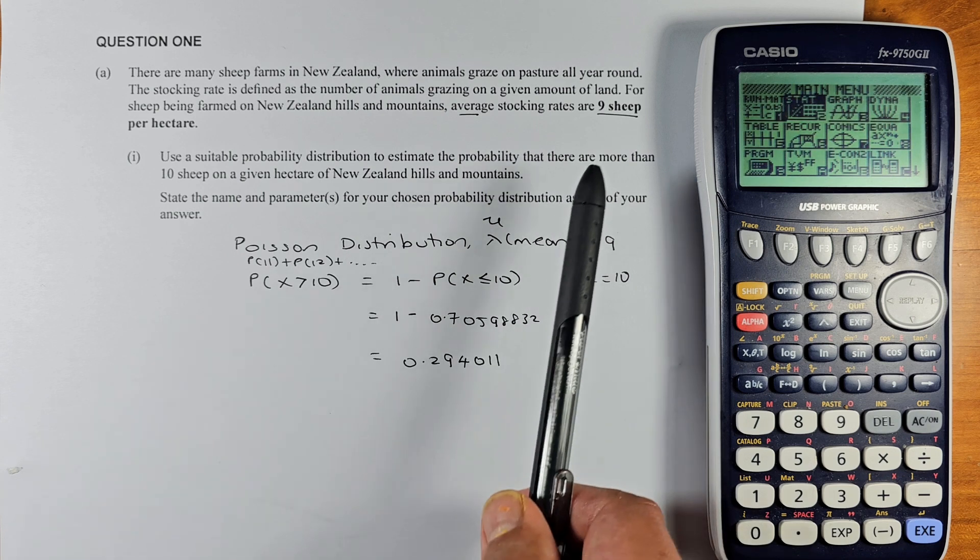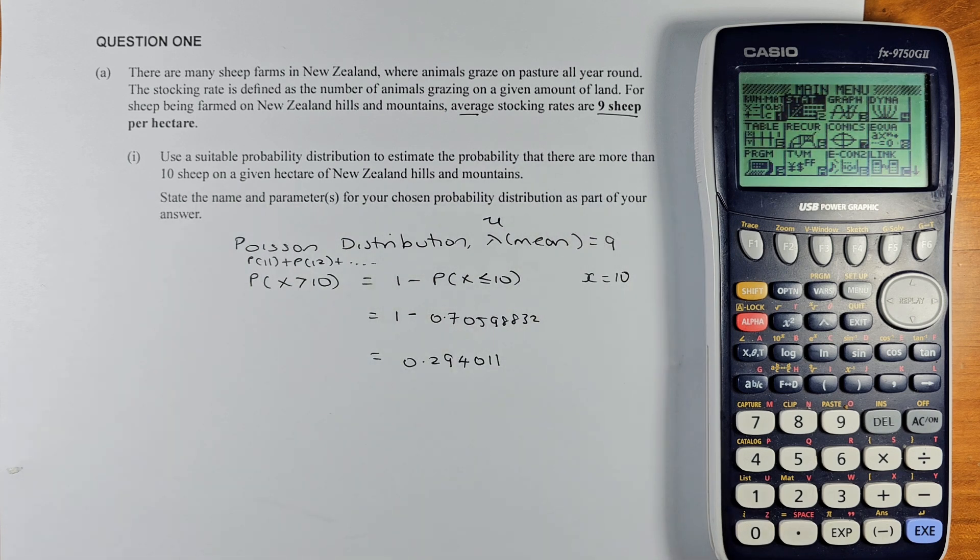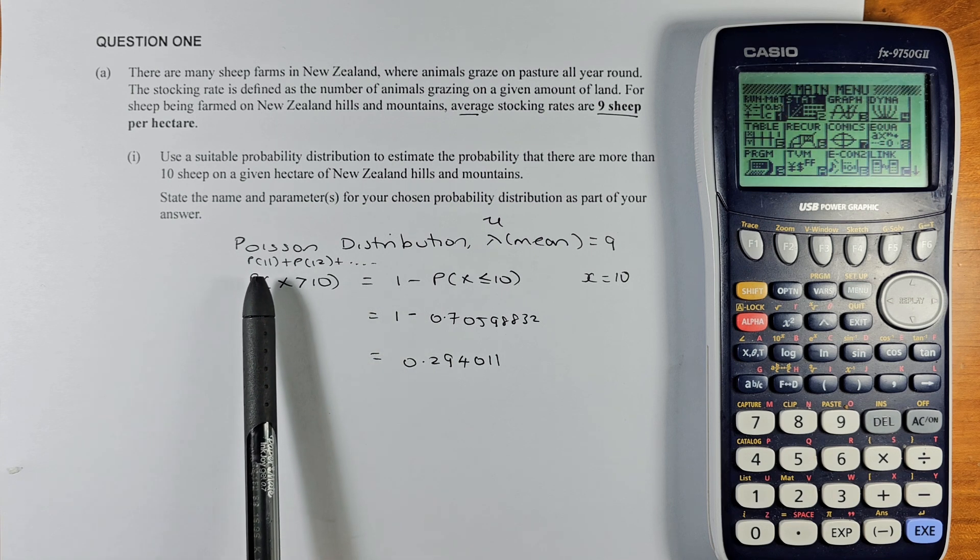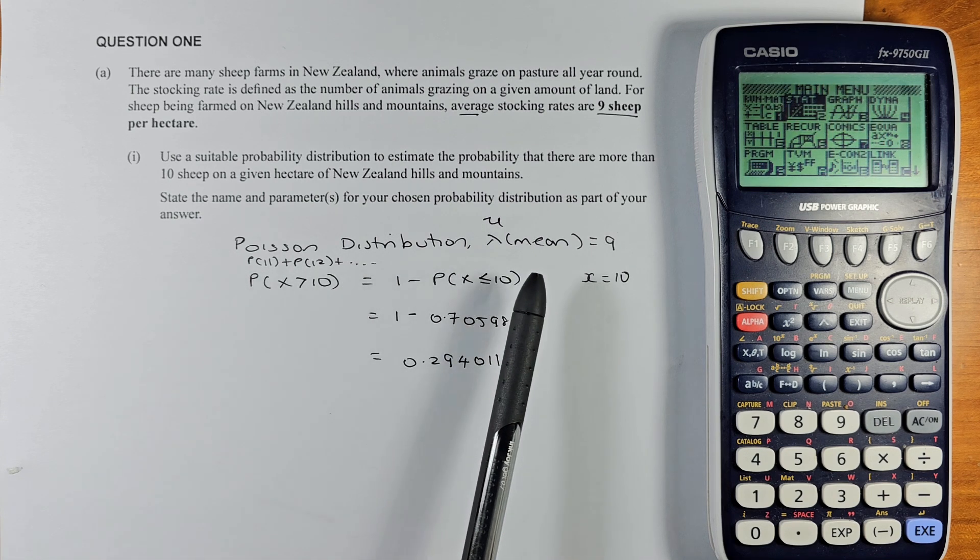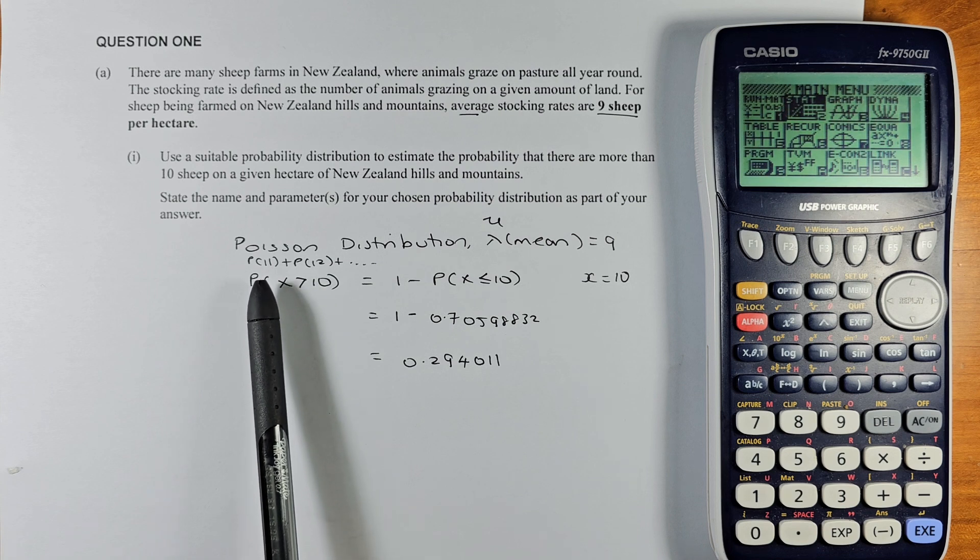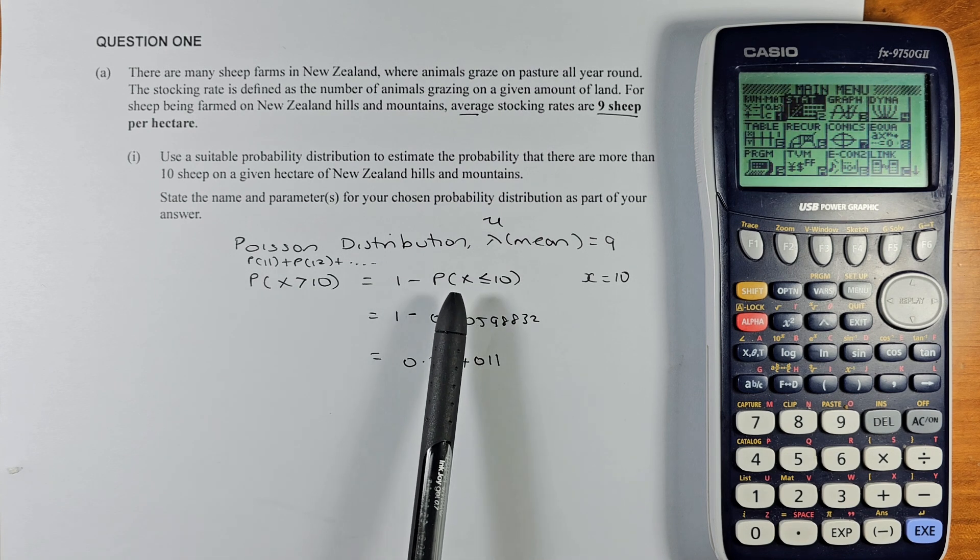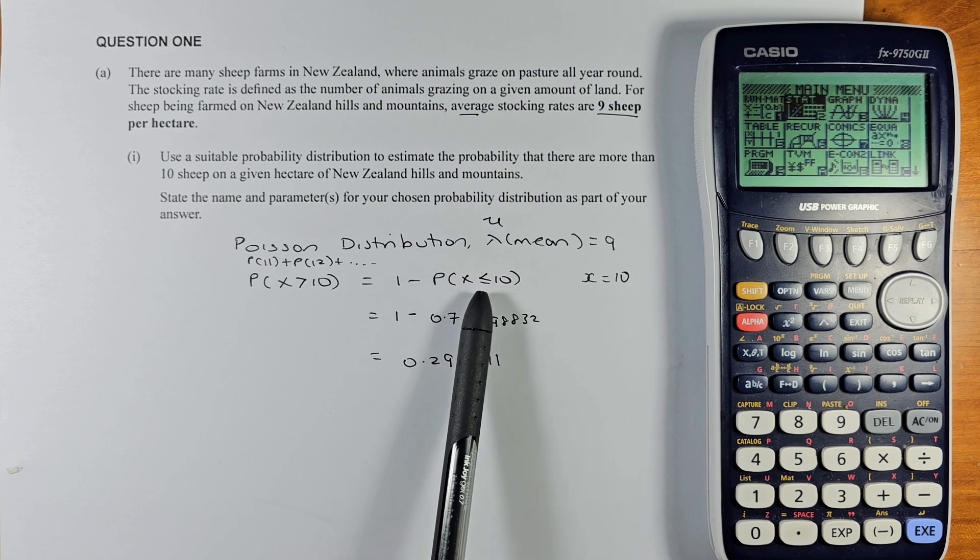Then they want to calculate the probability that there are more than 10 sheep on a given hectare. More than 10 sheep means you're looking for probability of x equal to 11, 12, 13 and so forth. So to calculate x is more than 10, you're going to take 1 minus probability x less than or equal to 10.